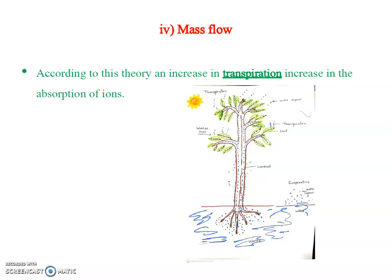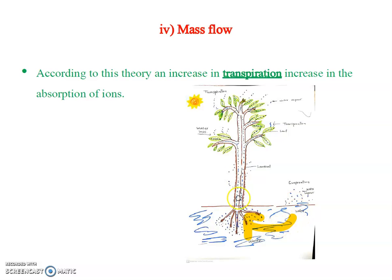The fourth theory is mass flow. According to this theory, an increase in transpiration leads to an increase in the absorption of ions. When transpiration — the loss of water in the form of vapor through aerial parts of the plant — takes place, roots absorb water, and along with the water, minerals and elements are absorbed by the roots. So this theory is called mass flow because minerals are absorbed in mass.